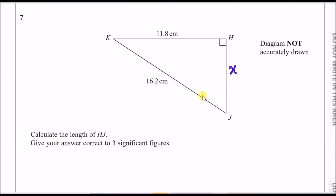In this case we use Pythagoras's theorem. Pythagoras states that a² + b² = c², in other words the squares of two sides must equal the hypotenuse squared. In this case the only hypotenuse is 16.2, so that's going to be our c.